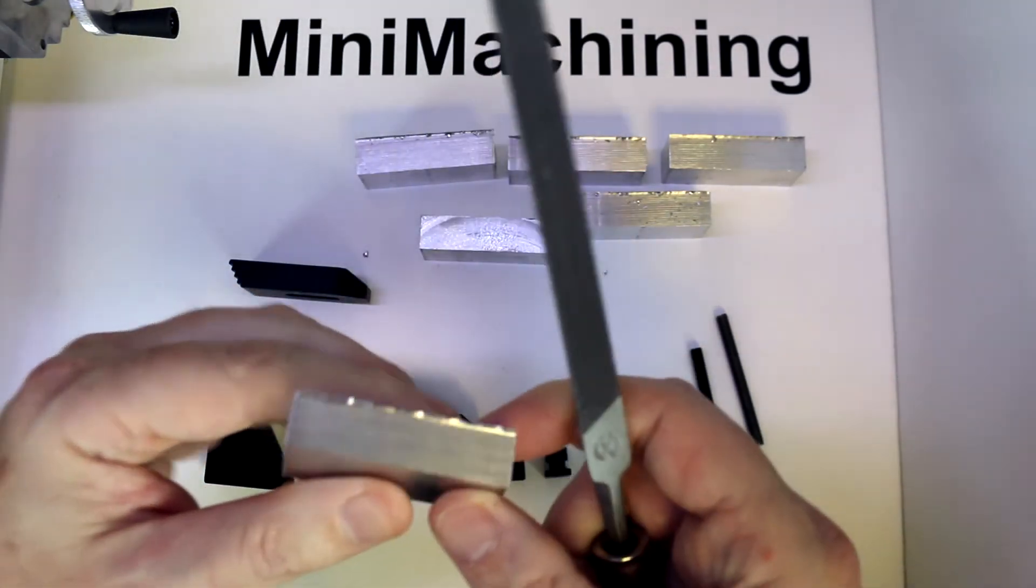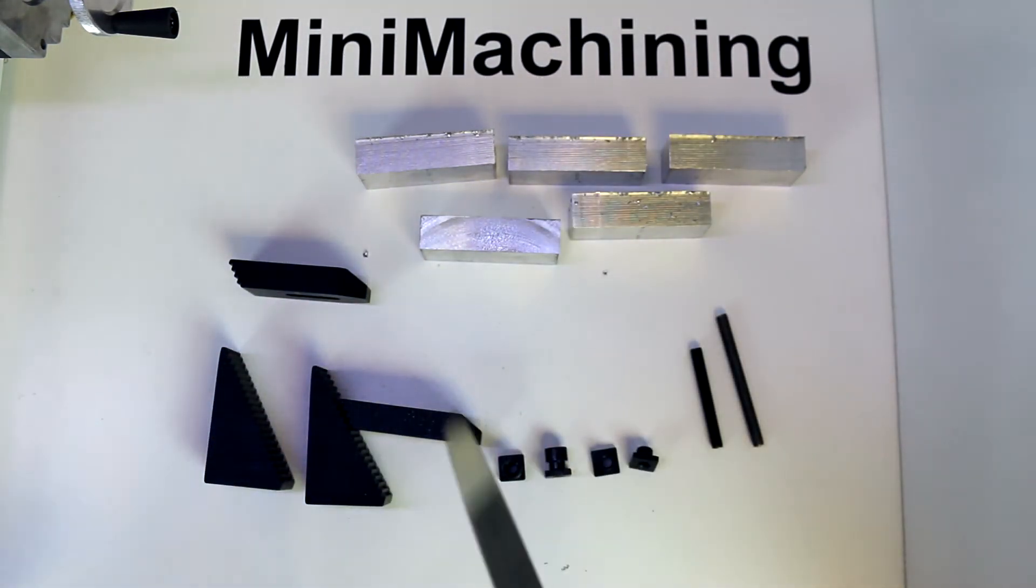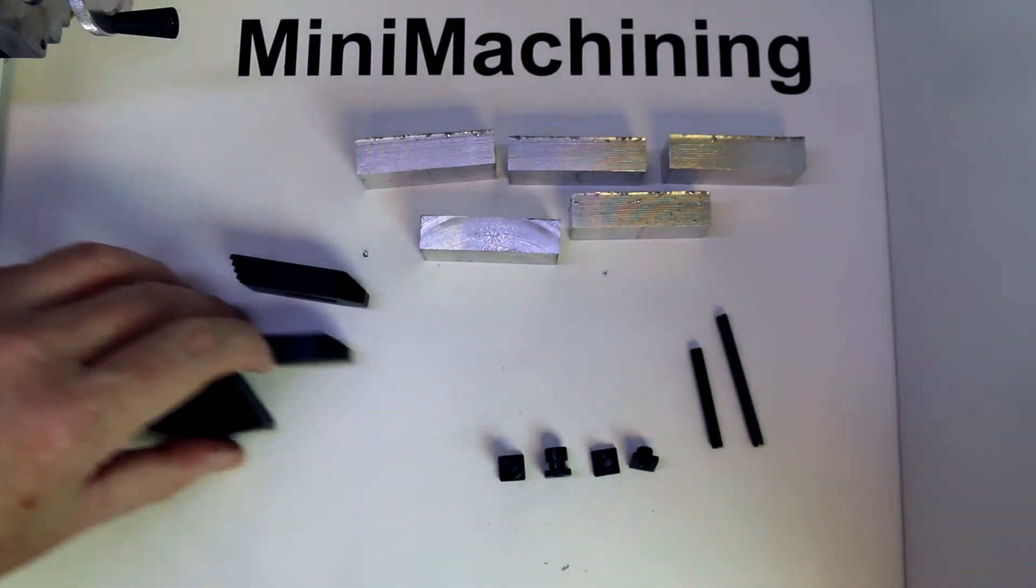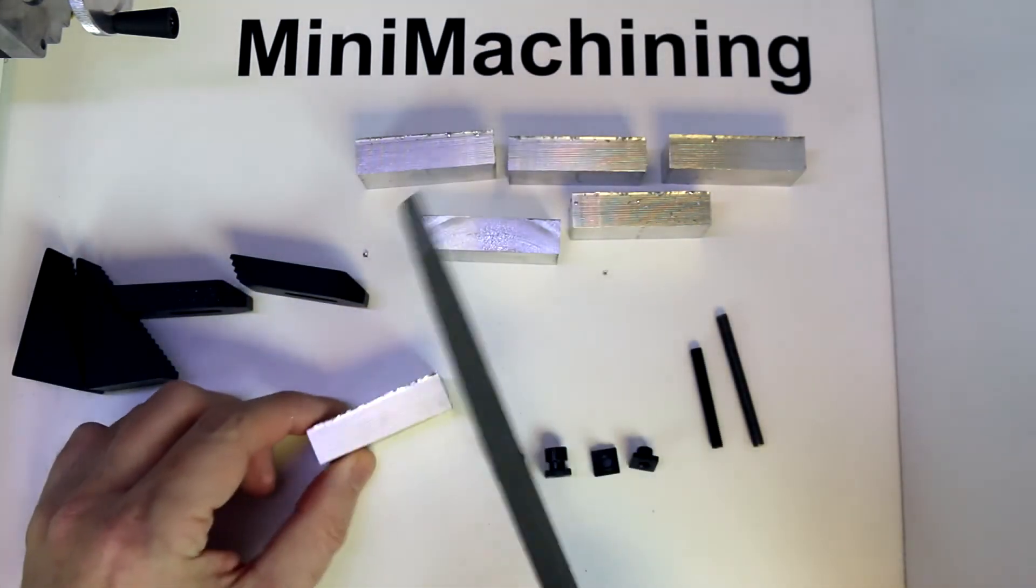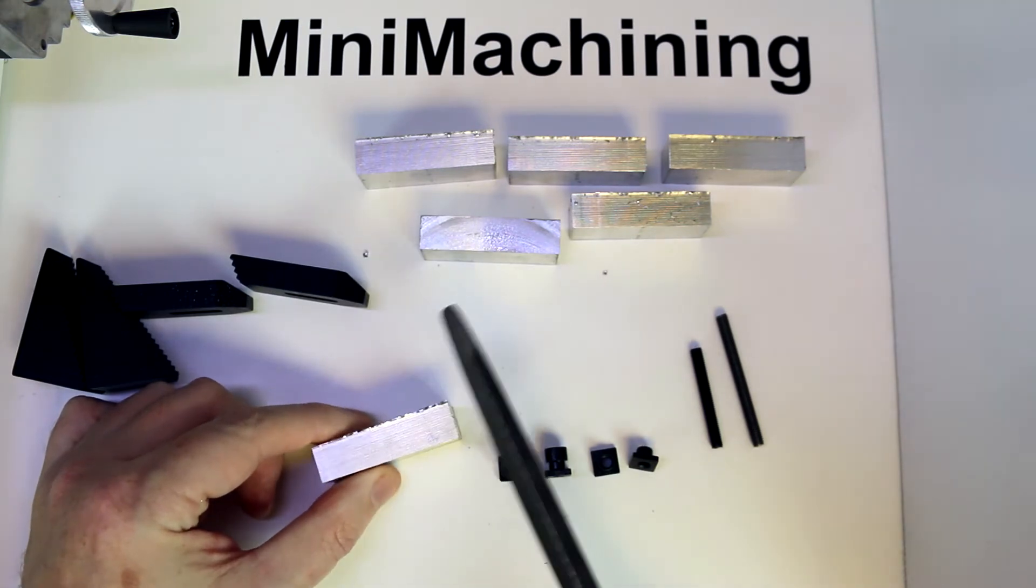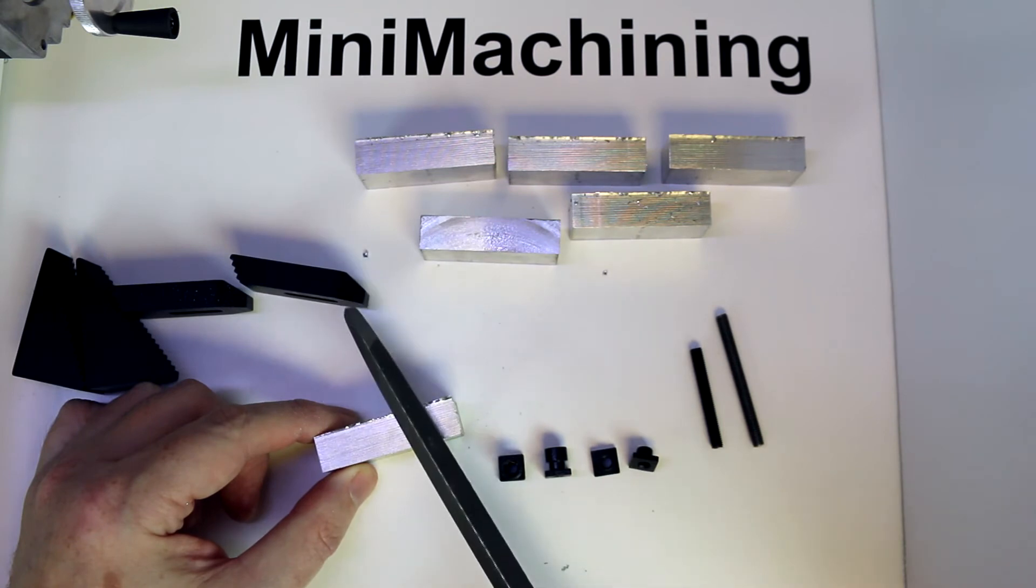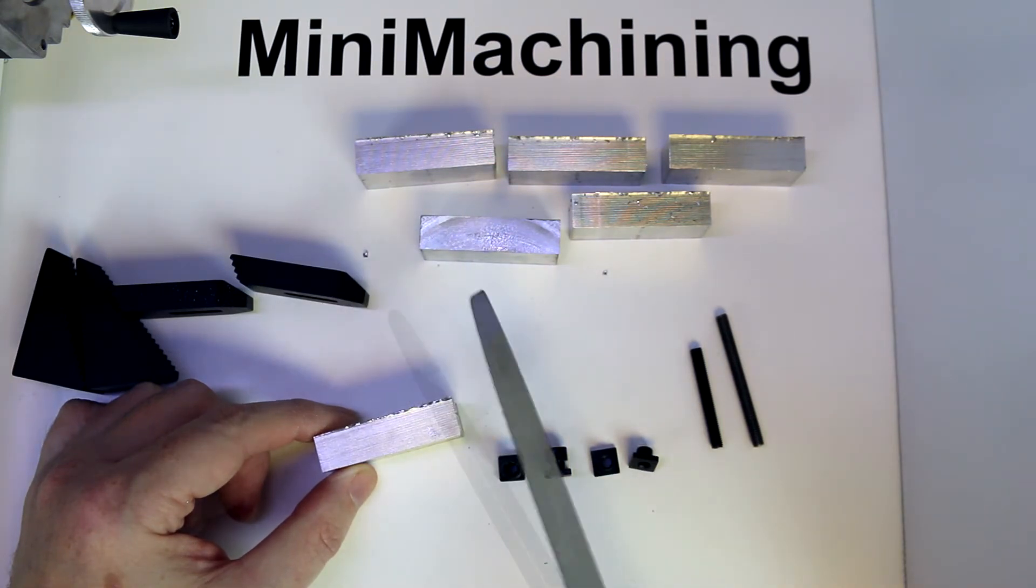Now, filing is easier to do with a vise. This really isn't an ideal situation where you're hand-holding it, but you can certainly do that in case you don't have a vise. But you're going to be able to go a lot faster and get this done quicker with a vise.